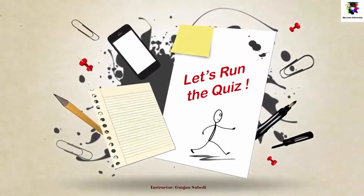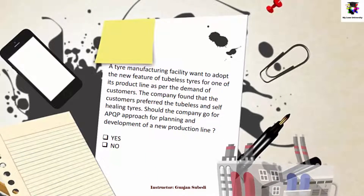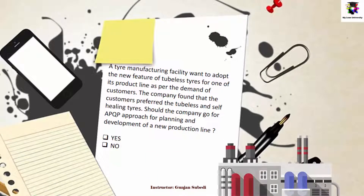Let's take a short quiz on this. Under which of the following scenarios is adopting APQP a must? As I mentioned earlier, APQP can be used by any type of manufacturing activity for improving products or processes, but we have to determine if we should use APQP in the following scenario. The first scenario: a tire manufacturing facility wants to adopt the new feature of tubeless tires for one of its product lines as per customer demand. The company found that customers prefer tubeless and self-healing tires. Should the company go for an APQP approach for planning and development of the new production line? Yes or no?